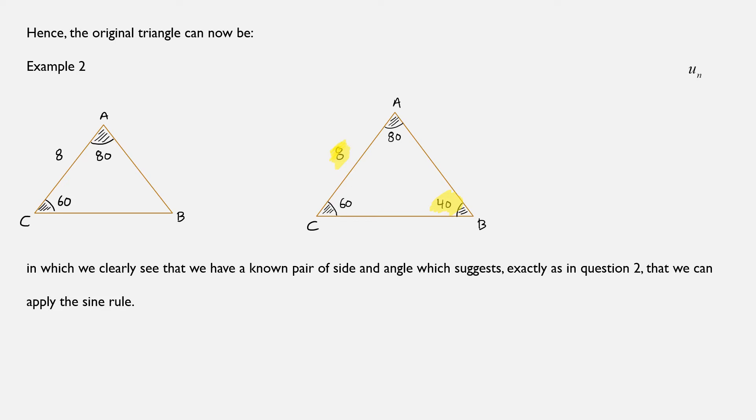And now, if we were to redo, to re-ask the second question, do we know a pair of side and opposite angle? We would say yes. So if we answer yes on this third question about the hidden information, we would still need to simply apply the sine rule.